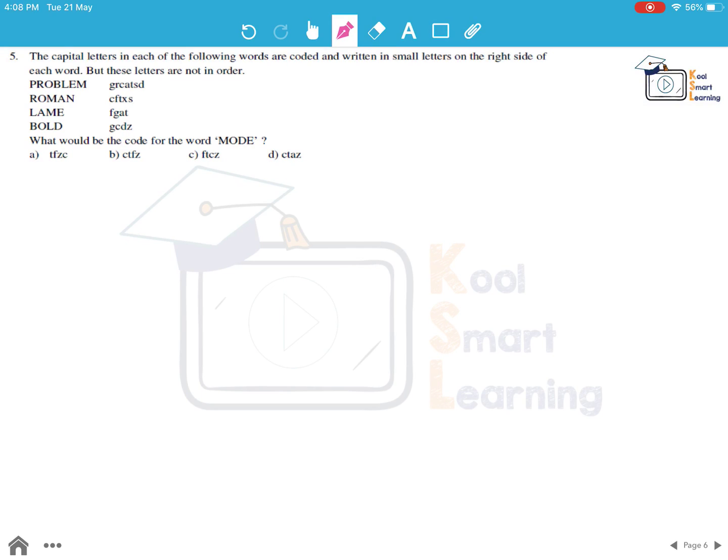So moving to the last question of this session. The capital letters in each of the following words are coded and written in small letters on the right side of each word. But these letters are not in order. So for problem we make it G, R, C, A, T, S, B. For Roman we have C, F, T, X, S. For lame it is F, G, A, T. For bold it is G, C, D, Z. What would be the code for the word Mode?